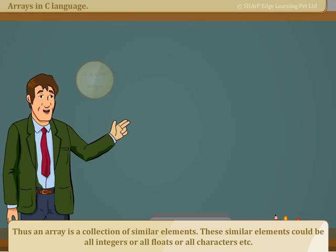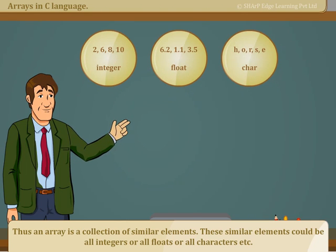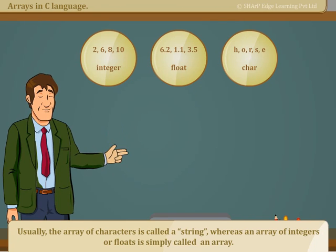These similar elements could be all integers, or all floats, or all characters. Usually, the array of characters is called a string, whereas an array of integers or floats is simply called an array.